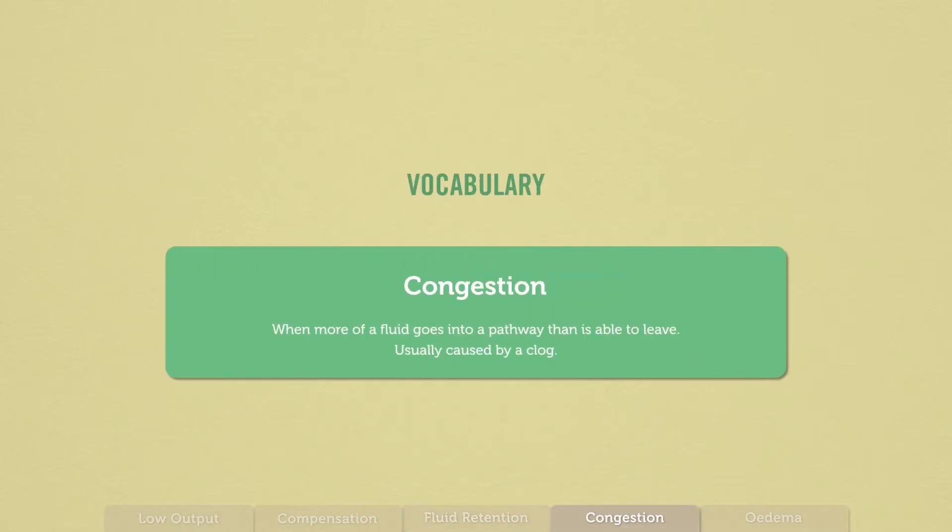Congestion is when more of a fluid goes into a pathway than is able to leave. Congestion is a mixture of a clog that prevents fluid from flowing forward and the overflow that occurs behind the clog. I still can't imagine what is congestion. And why is fluid trying to leave? Is the fluid entering?